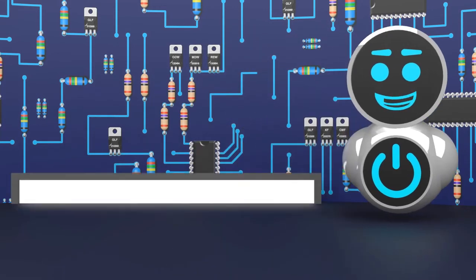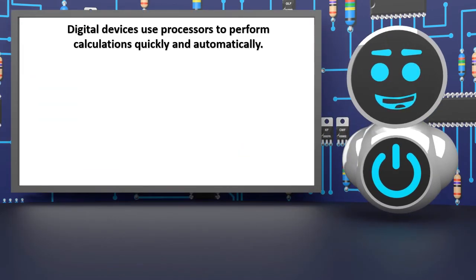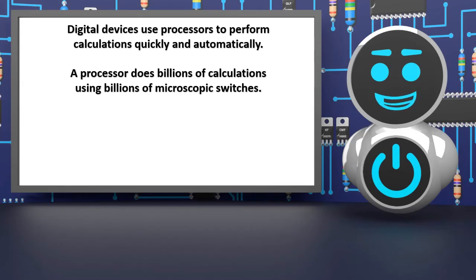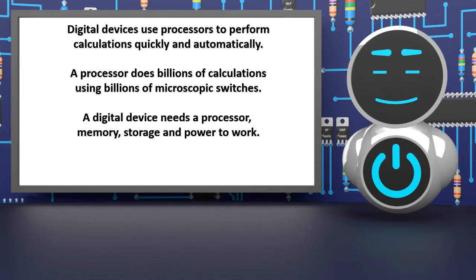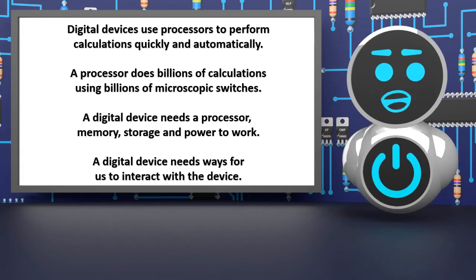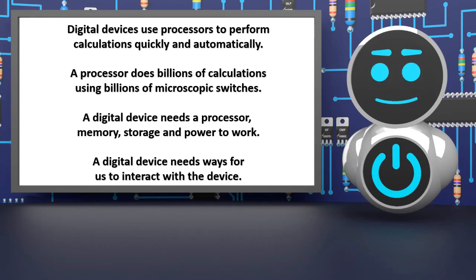Let's look at what we have learnt in this lesson: digital devices use processors to perform calculations quickly and automatically. A processor does billions of calculations using billions of microscopic switches. A digital device needs a processor, memory, storage and power to work, and it needs ways for us to interact with it. Well done — as a class, think about what other digital devices there are. Goodbye for now, see you for the next lesson.